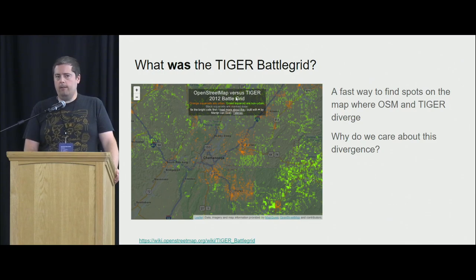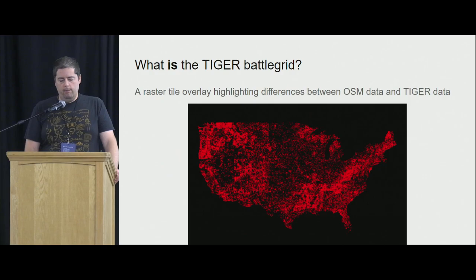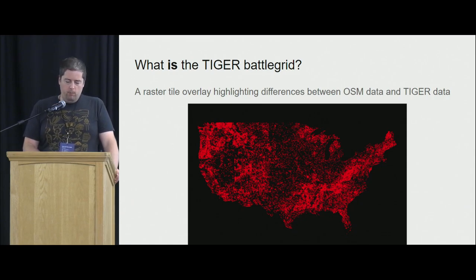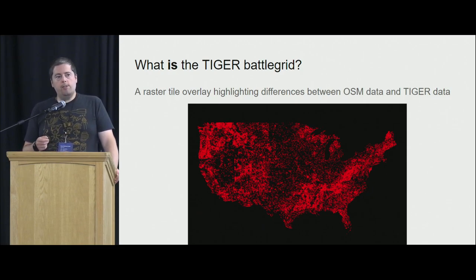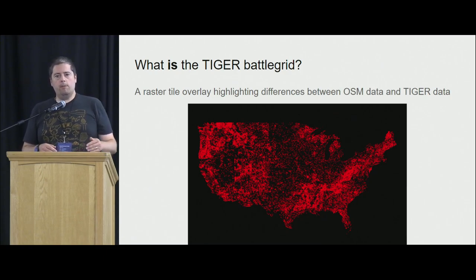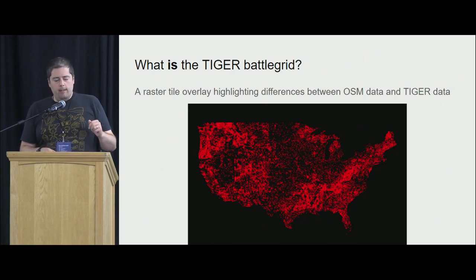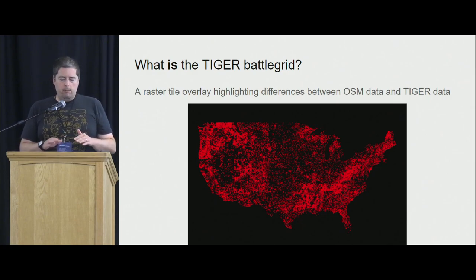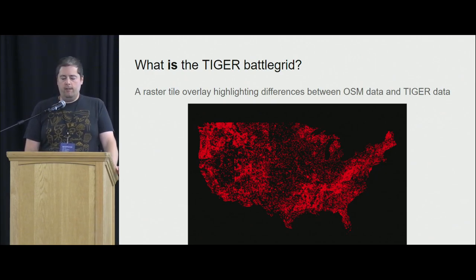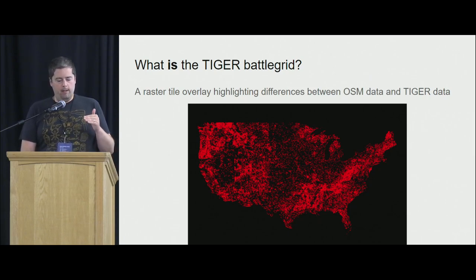Martijn lost the code for this, or it just didn't work anymore, so one day I decided to pick it up and rebuild it. What we ended up with was a project that looks very similar — in this case, the red is highlighting the differences between OpenStreetMap and Tiger. This screenshot comes from the 2023 Tiger data. If you zoom into one of these spots, you'll see OpenStreetMap data that diverges from Tiger data.